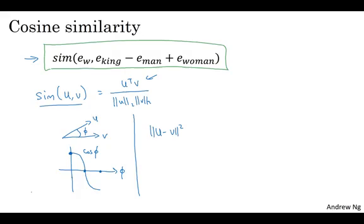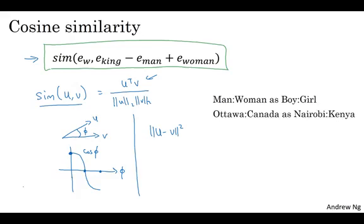So one of the remarkable results about word embeddings is the generality of analogy relationships they can learn. So for example, it can learn that man is to woman as boy is to girl, because the vector difference between man and woman similar to king and queen and boy and girl is primarily just the gender. It can learn that Ottawa, which is the capital of Canada, that Ottawa to Canada is as Nairobi is to Kenya. So that's the city capital is to the name of the country. It can learn that big is to bigger as tall is to taller. And it can learn things like that yen is to Japan since yen is the currency of Japan as ruble is to Russia. And all of these things can be learned just by running a word embedding learning algorithm on a large text corpus.